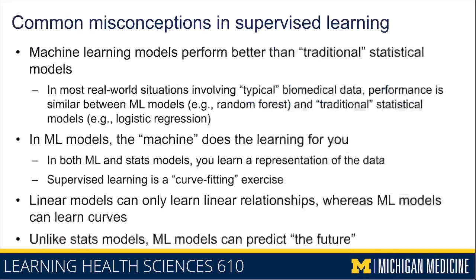The last misconception is that unlike statistical models, machine learning models predict the future. That's simply not true. Both statistical models and machine learning models predict an outcome or a series of outcomes using a set of predictors. If that outcome happens in the future, then your model is trying to predict something in the future. But if that outcome is in the present or the past, your model doesn't know that. There's nothing special about the future that machine learning models can do that statistical models cannot.